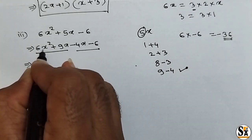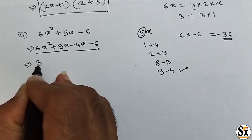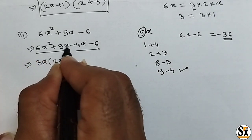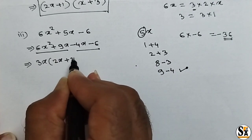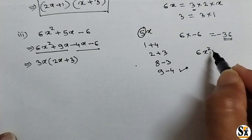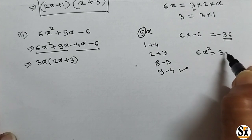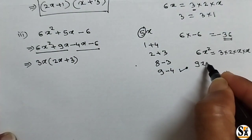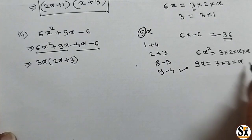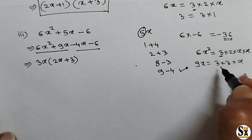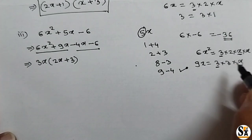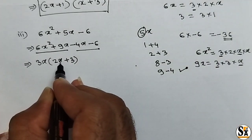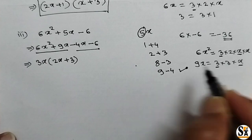From the first two terms, we can take 3x as common. Because 6x squared can be written as 3 into 2 into x into x, and 9x can be written as 3 into 3 into x. So 3 and x are both common, giving us 3x outside the bracket. Remaining factors are 2x from the first term and 3 from the second term. So we write 3x times the bracket 2x plus 3.